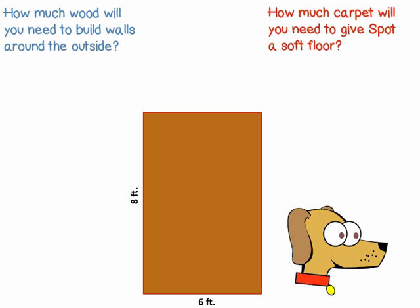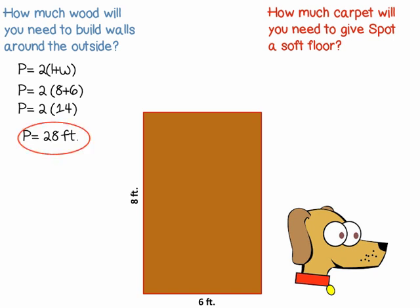First, how much wood will you need to build the walls around the outside? Since we are talking about the outside of the object, we are going to use the formula for perimeter. We will use perimeter equals 2 times the length plus the width. Our length is 8 feet and our width is 6 feet, so 2 times 8 plus 6. 8 plus 6 is 14, so now we multiply 2 times 14 to get 28 feet. We are going to need 28 feet of wood to go around the outside of Spot's house.